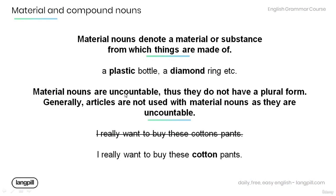Now material nouns are uncountable, thus they do not have a plural form. Generally, articles are not used with material nouns as they are uncountable. This sentence would be incorrect because the material noun cotton should not be used in its plural form. The correct sentence would be: 'I really want to buy these cotton pants.'